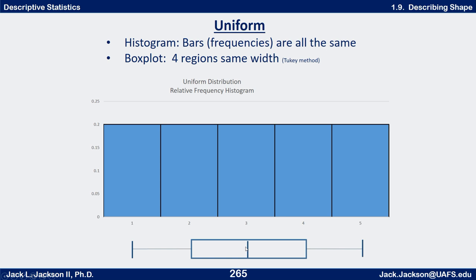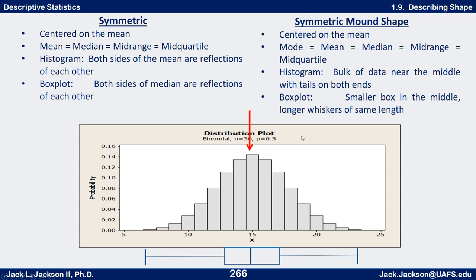We can also talk about mound-shaped. In a uniform distribution all bars are approximately the same height, but in a mound-shaped distribution it's not only symmetric and centered on the mean — it's mounded up in the middle. The highest bar, the mode, is also the mean, median, midrange, and midquartile. All five measures of central tendency are exactly the same. The bars trail off into tails to the left and right with smaller and smaller bars as you go out. That's called mound-shaped.